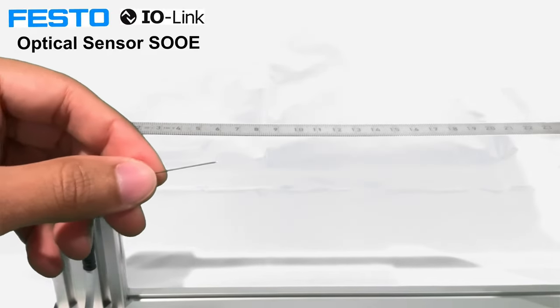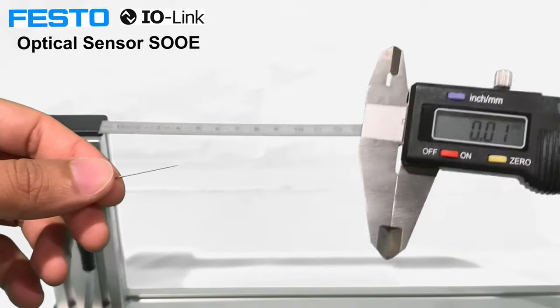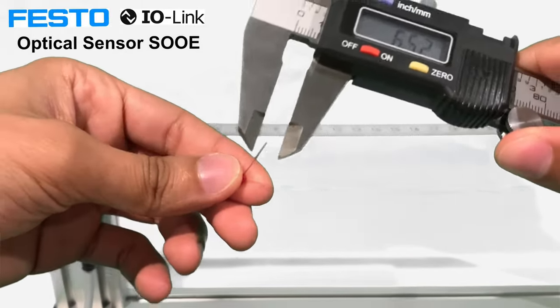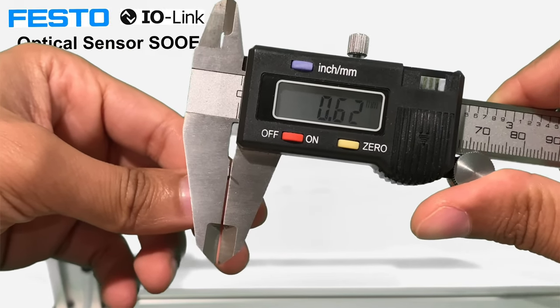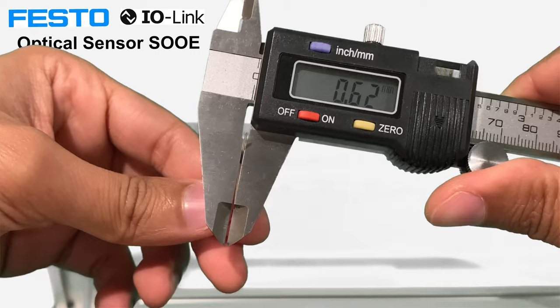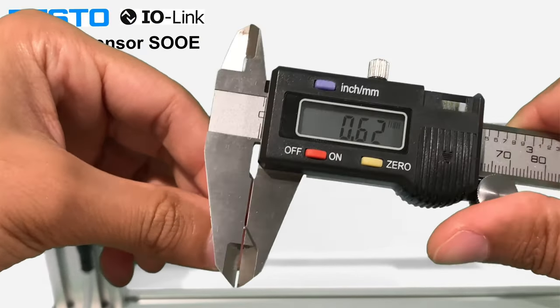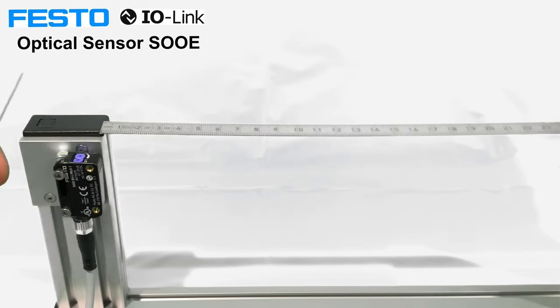Just to be clear on the needle size, the diameter of this needle is 0.62 millimeters. They wanted to be able to detect the presence of this needle.